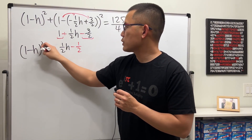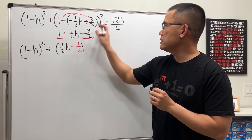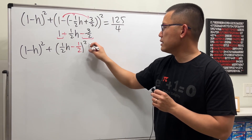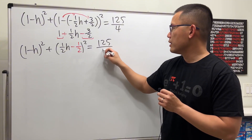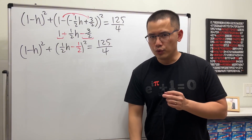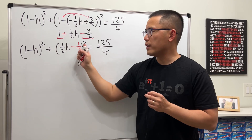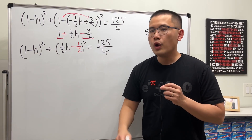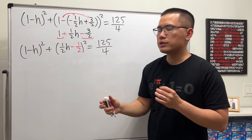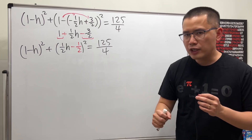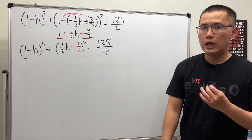Alright, so that's the inside. We bring it down: one minus h, all squared, plus that squared, is equal to 125 over 4. Do not take the square roots on both sides and cancel. We really have to multiply this out, combine terms, and then we will end up with a quadratic equation and go from there.